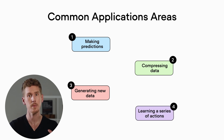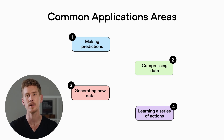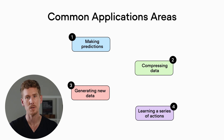So this is a broad overview of the four different categories of machine learning, and now let's dive a little bit deeper and see a few concrete examples of each of these different areas.